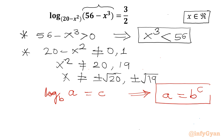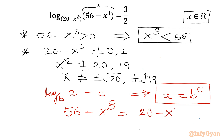Applying this property, we get: 56 minus x³ = (20 minus x²)^(3/2).